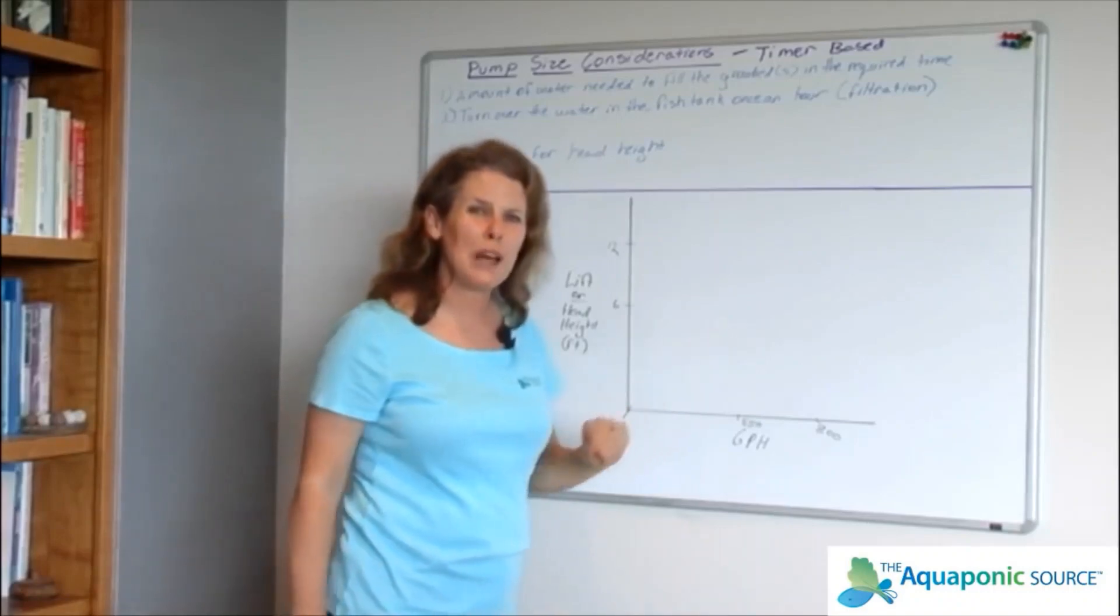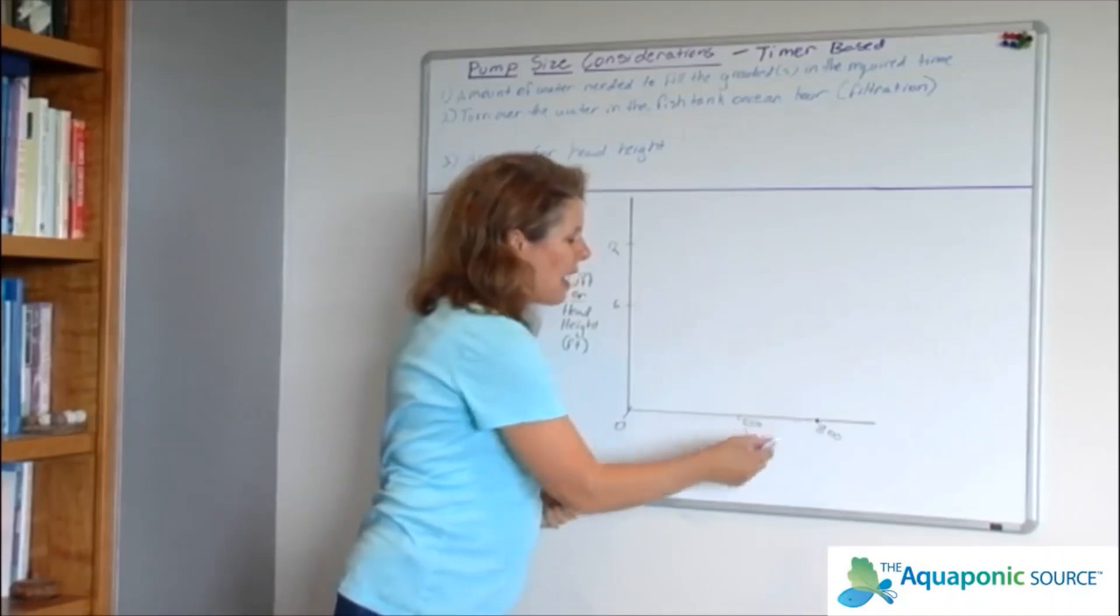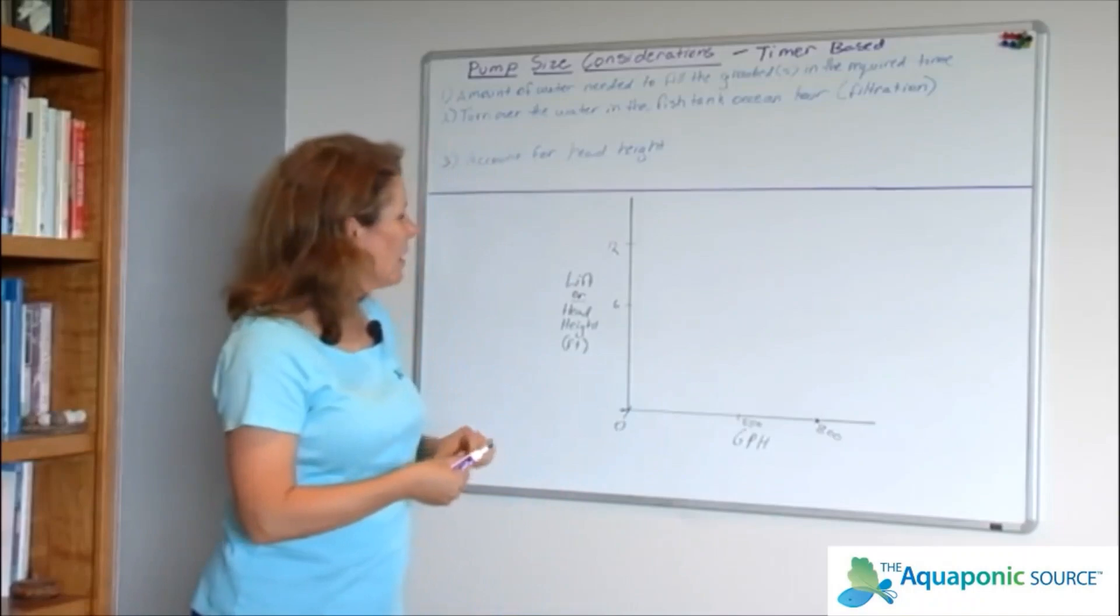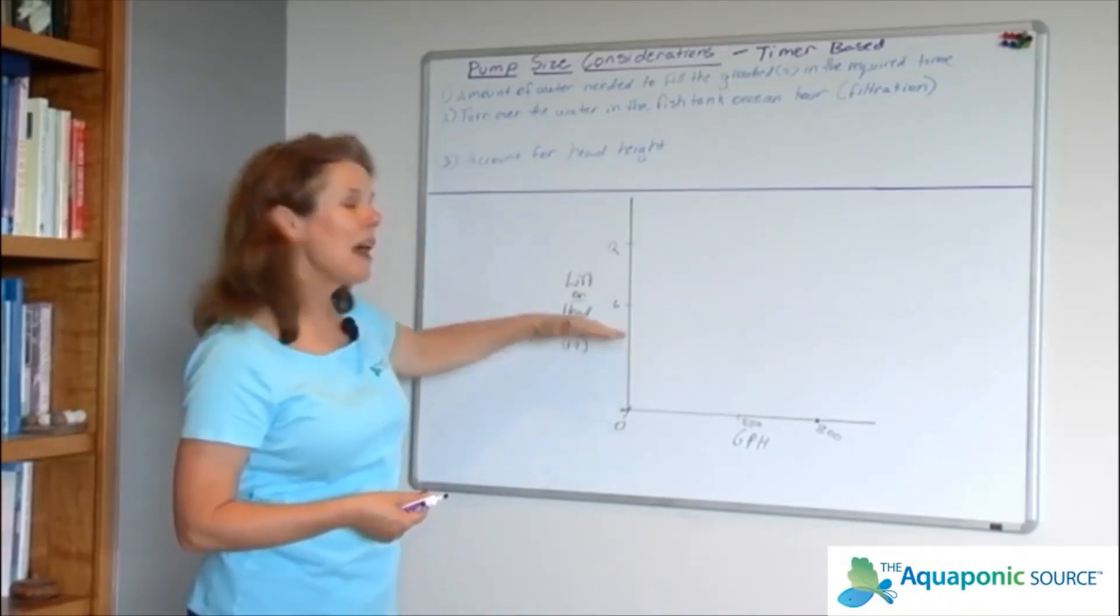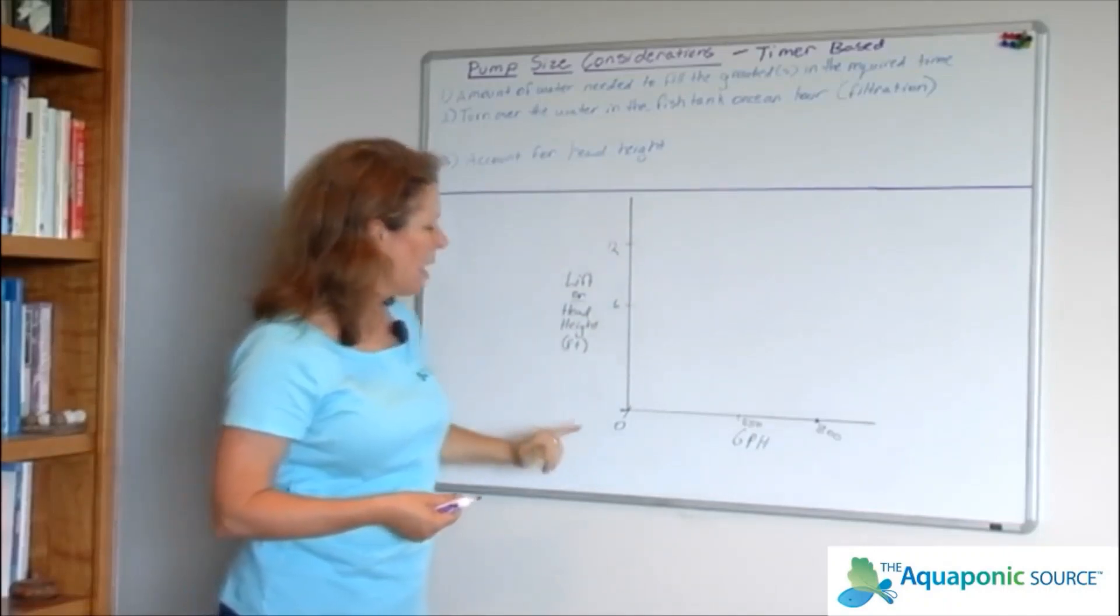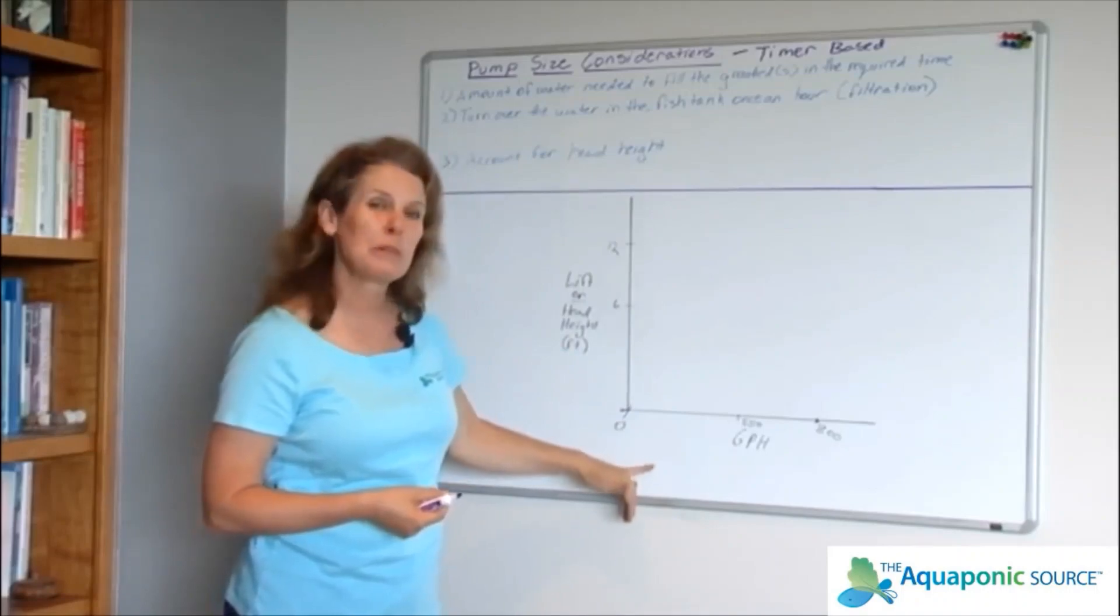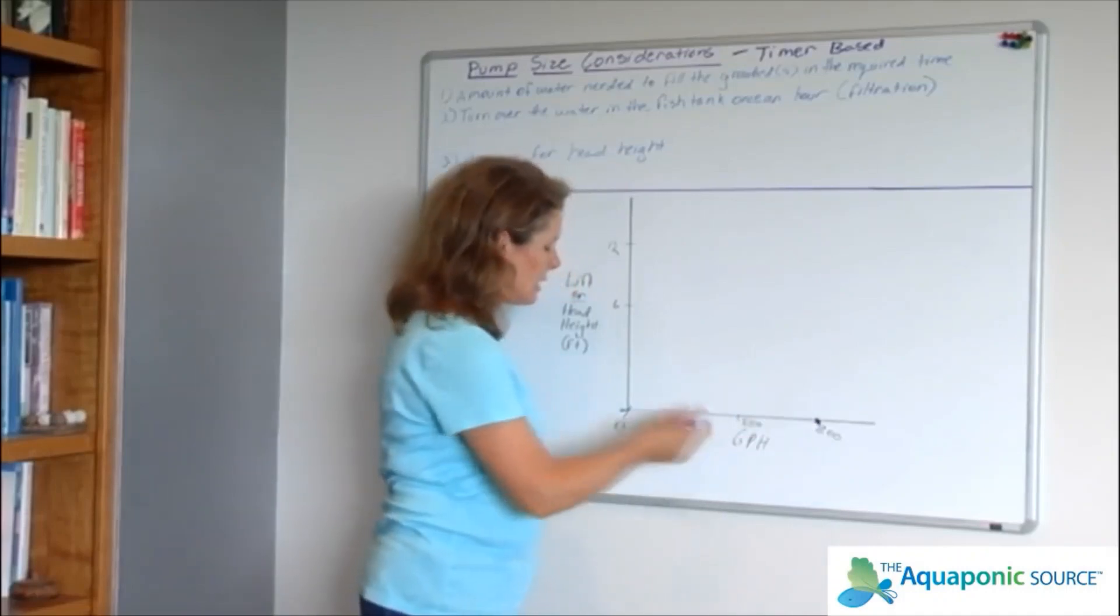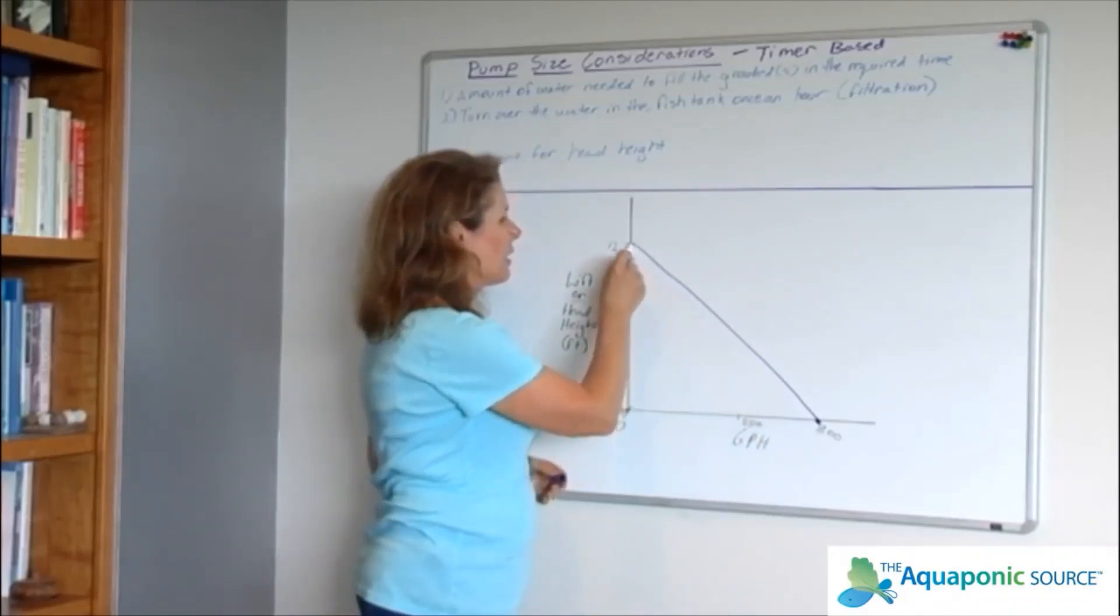Let's take an 800 gallon per hour pump, which is the purple line on the chart that you're looking at. At 800 gallons per hour, that's only at zero lift. This vertical axis here is showing in feet how high up you're trying to push that water, and this horizontal axis is showing gallons per hour or the performance of the pump.